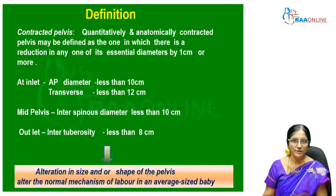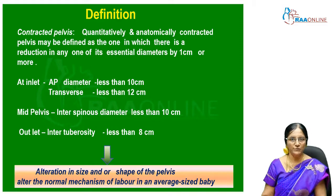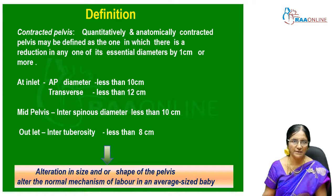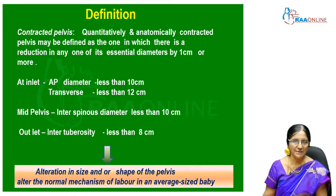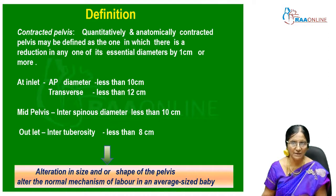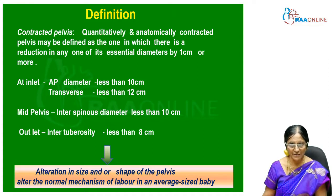Coming to the definition: a contracted pelvis is called quantitatively an anatomically contracted pelvis, defined as one in which there is a reduction in any one of its essential diameters by one centimeter or more. AP diameter less than 10 cm or transverse less than 12 cm at the inlet; in the mid pelvis, interspinous diameter less than 10 cm; outlet intertuberous diameter less than 8 cm.